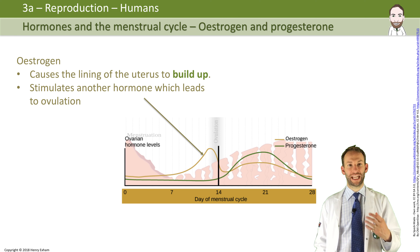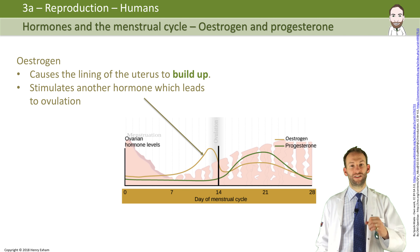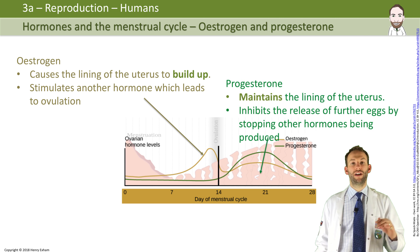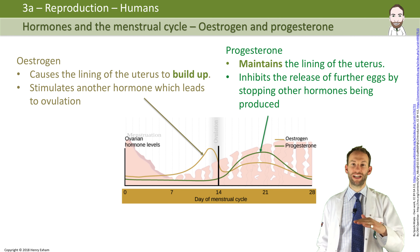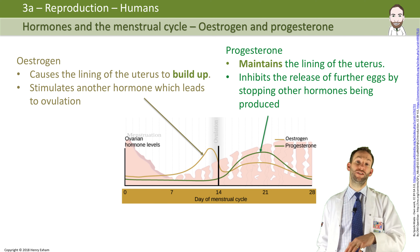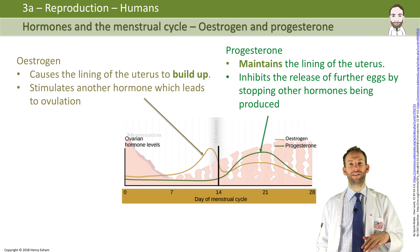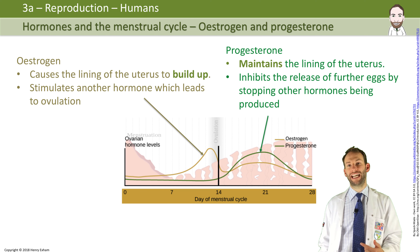Estrogen also stimulates another hormone which leads to the egg being released. Progesterone, as you can see from the green line on the graph, is much higher in the second half — that fourth phase — where you maintain the lining. That's because progesterone maintains that lining and also stops any further eggs being released, because you don't want another egg released at that point if you've already released one and might be pregnant.